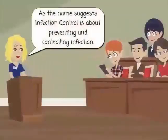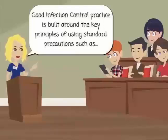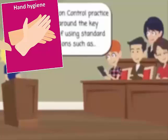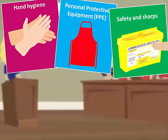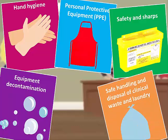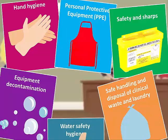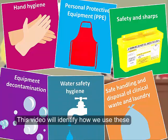As the name suggests, infection control is about preventing and controlling infection. Good infection control practice is built around the key principles of using standard precautions, and these principles are: hand hygiene, personal protective equipment, safety and sharps, equipment decontamination, safe handling and disposal of clinical waste and laundry, and water safety hygiene. This video will identify how we use these preventions to control infection.